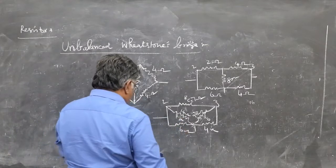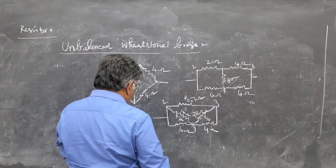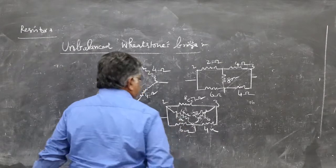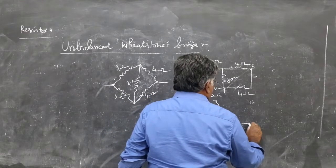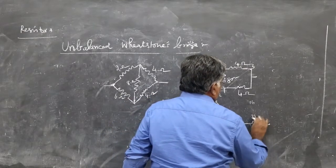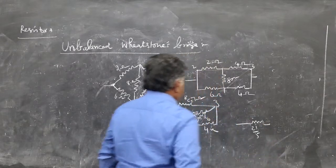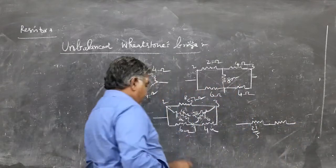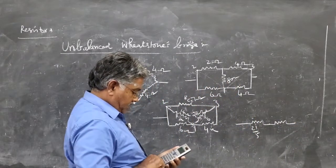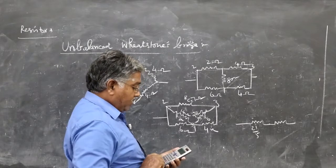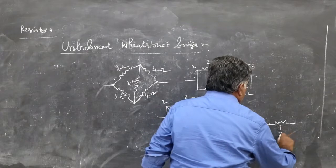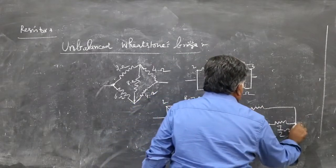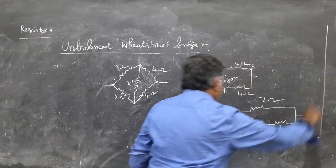So 14 and 6 parallel effective will be 21 by 5. These two in parallel, that is 28 and 4: 7 by 2, all ohms. Here, 7 ohms.